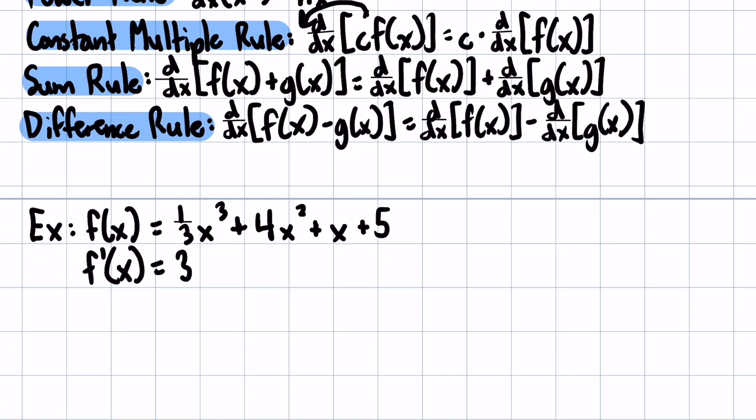So we have 3 times 1 third times x, and then we subtract 1 from our power. So 3 minus 1 is 2. And then for our next one, we bring down the power, which is 2. So we have 2 times 4 times x, and then 2 minus 1 is 1. So this is just x.